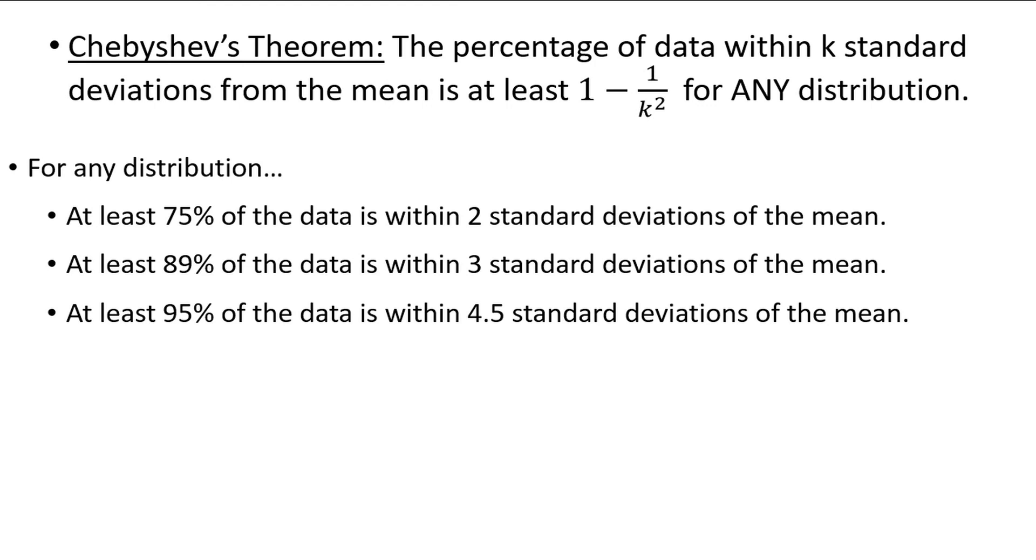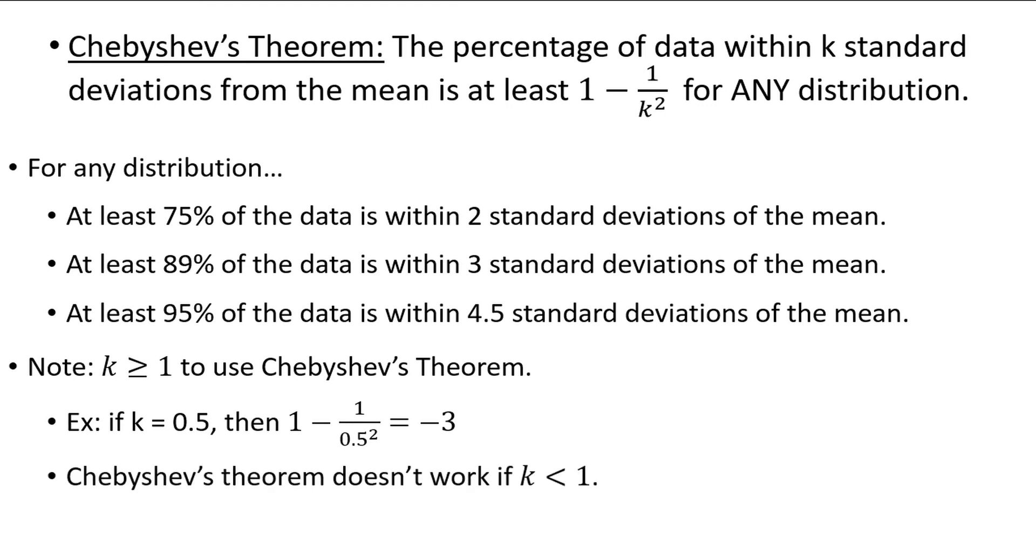Also note that in order to use Chebyshev's theorem, k must be greater than or equal to 1. To see why, assume that k was equal to 0.5. Then we would have 1 minus 1 divided by 0.5 squared, which is equal to negative 3, and doesn't really make any sense. So k must be greater than or equal to 1.